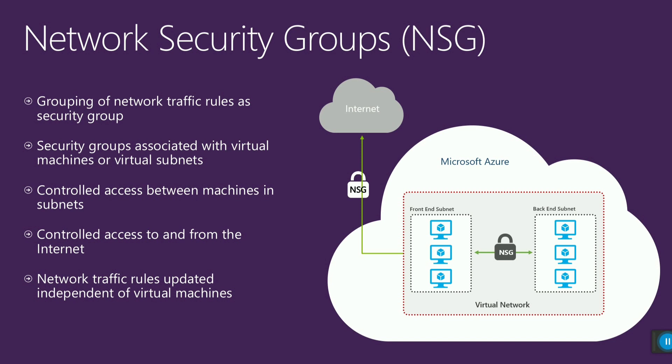Because when it comes to manageability and troubleshooting, managing NSGs on individual VMs becomes very difficult. To summarize: NSGs are Layer 4, they check source and destination and allow traffic, but they do not perform any packet inspection.